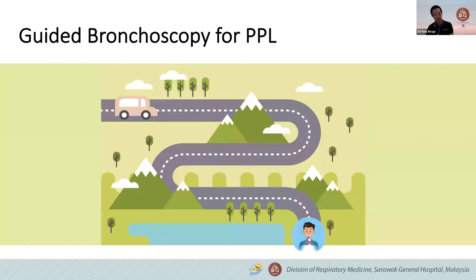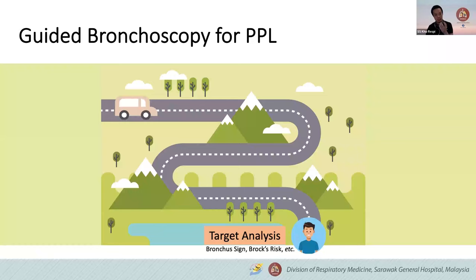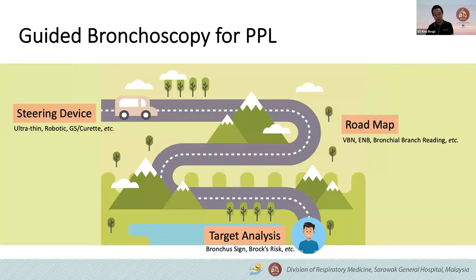We need to analyze the target properly — the bronchus sign, whether we really need to biopsy, whether the lesion is high-risk. After that, you need to choose your steering device. If you are well-resourced, you have the robotic. We are using Ultra-Thin Scope. If not, you have your guide sheath and QRAT. Then you will need a roadmap to reach your target — we have VBN, ENB, and the bronchial branch reading technique. Once you reach your target, you need to verify. You have radial EBUS, cone-beam CT, lung vision, et cetera. Once you verify your navigation, then you start to do your biopsy through forceps, needle, cryo, et cetera.